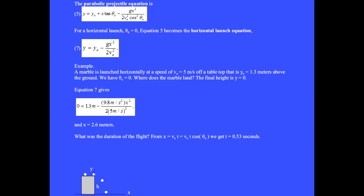Here is equation 5, the parabolic relation between x and y. For a horizontal launch, θ₀ equals 0. When θ equals 0, the cosine is 1 and the tangent is 0. And equation 5 becomes equation 7, the horizontal launch equation.